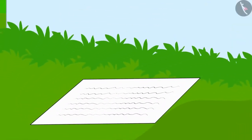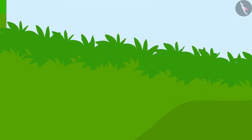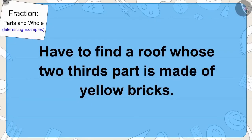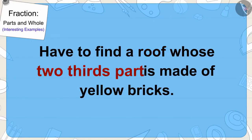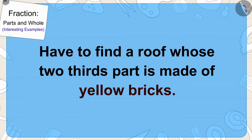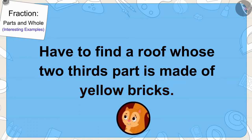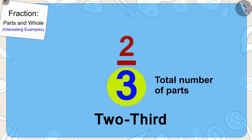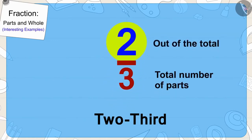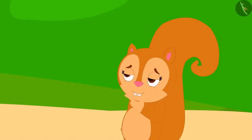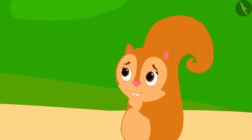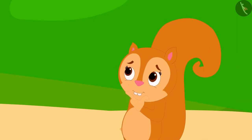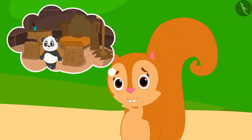Chanda found her next clue under this window. It was written that she would have to find a roof whose two-thirds part is made of yellow bricks. Children, can you tell what kind of roof it will be? It will be a roof divided into three equal parts and two parts made of yellow bricks. Chanda remembered she had seen such a roof over her friend Golu Panda's house.